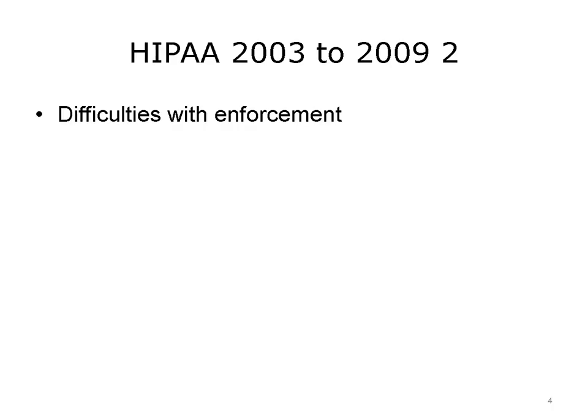However, there also were difficulties with enforcing the regulations. Originally, enforcement was divided between the Centers for Medicare and Medicaid Services, or CMS, and the Office for Civil Rights, or OCR. OCR handled privacy complaints, while CMS was responsible for the enforcement of the security regulations. This created inefficiencies.